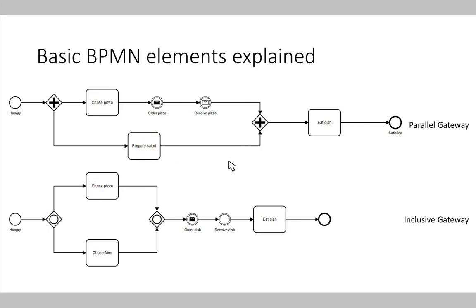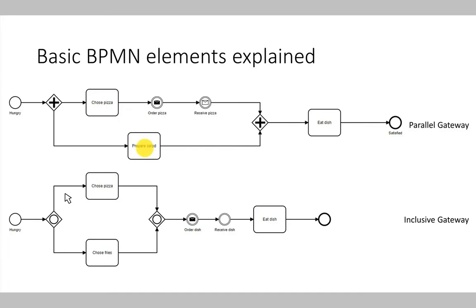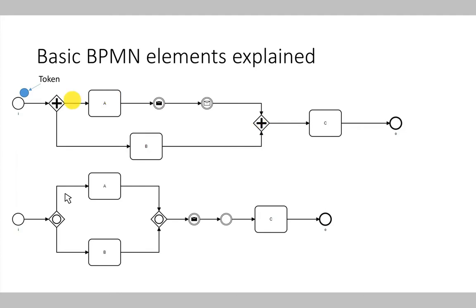In contrast to that, there is also the most complex gateway in this introductory video: the inclusive OR gateway. The inclusive OR gateway allows us to either choose one, the other, or both process paths. So in contrast to the parallel gateway where both paths are always chosen, and the XOR gateway where only one is chosen, all variants are possible — either one or the other or both. This is rather complex to understand, so we use the so-called process traces to visualize how a process is executed and what the semantic of different elements — like a parallel split or inclusive OR gateway — actually is.